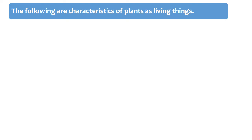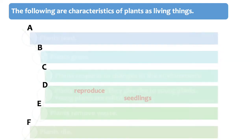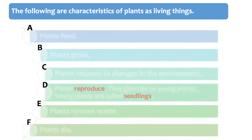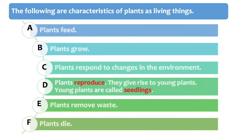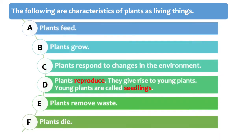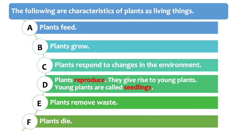The following are characteristics of plants as living things. A. Plants feed. B. Plants grow. C. Plants respond to changes in the environment. D. Plants reproduce — they give rise to young plants. Young plants are called seedlings. E. Plants remove waste.